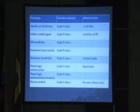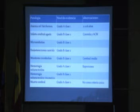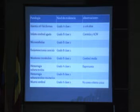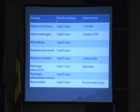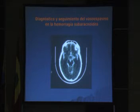En la hemorragia subaracnoidea el nivel de evidencia es clase 2 grado B para hemorragia intracerebral. Como dice el doctor Ciro, no importa la evidencia, lo importante es que eso ayude a una terapéutica. En muerte cerebral, nunca utilizado como criterio único, siempre acompañado de criterios clínicos diagnósticos de muerte cerebral. Hablemos un poco del diagnóstico y seguimiento del vasospasmo por Doppler en la hemorragia subaracnoidea.